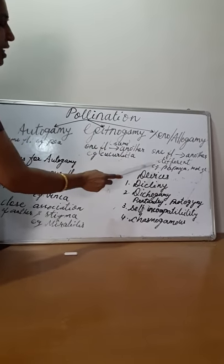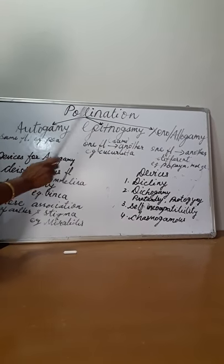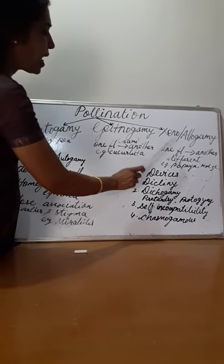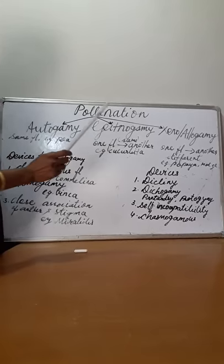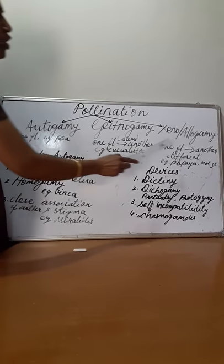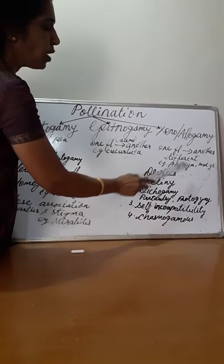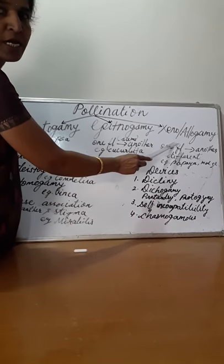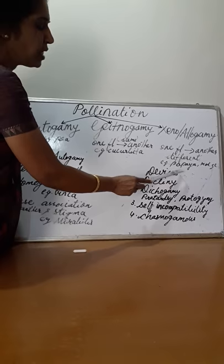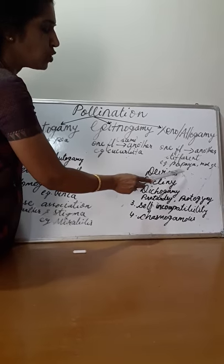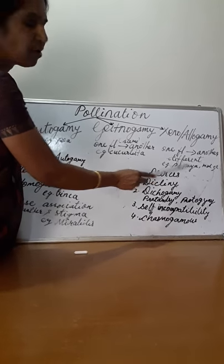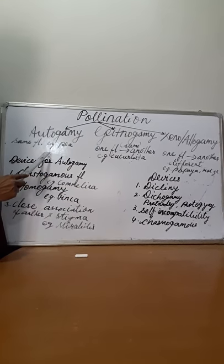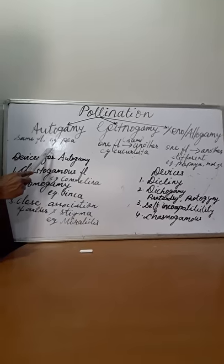So what is the difference between autogamy, geitonogamy, and xenogamy? In xenogamy, it is cross pollination and the genetic constitution is different, unlike geitonogamy and autogamy.